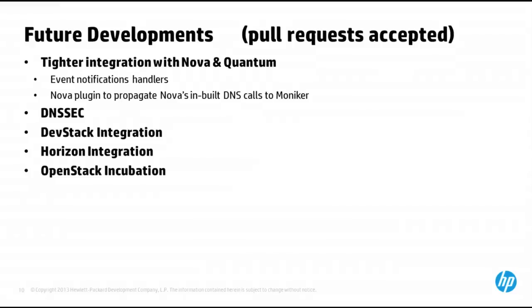For future developments: pull requests are greatly accepted. We're working on tighter integration with Nova and Quantum, processing events from those and making appropriate changes to Moniker. Also on the roadmap: DNSSEC, DevStack integration, Verizon integration, and we want to apply for OpenStack incubation — something we're going to be doing very soon.